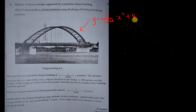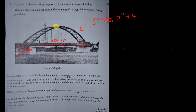The question says the distance between the two ends of the curve located on the bridge is 400 meters, and the height of the bridge is five meters from the ground. We need to find the maximum height of the building from the ground. So from one end to the other end of the bridge you get 400 meters, the bridge height is five meters, and the question wants the total maximum height here.